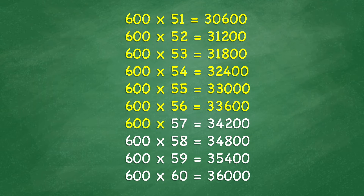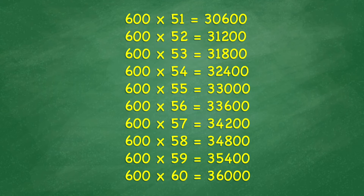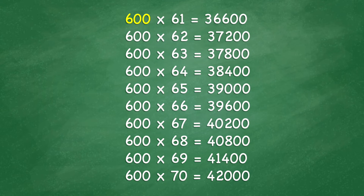600 x 57 equals 34,200. 600 x 58 equals 34,800. 600 x 59 equals 35,400. 600 x 60 equals 36,000. 600 x 61 equals 36,600.